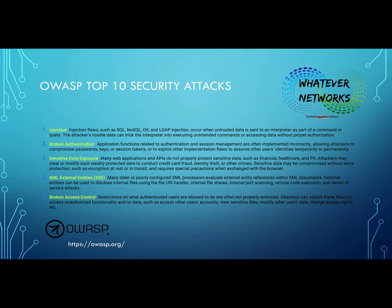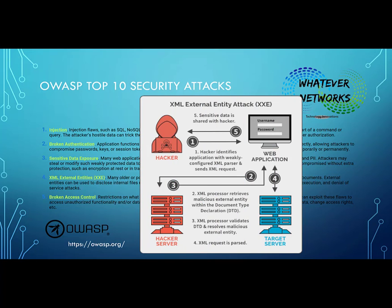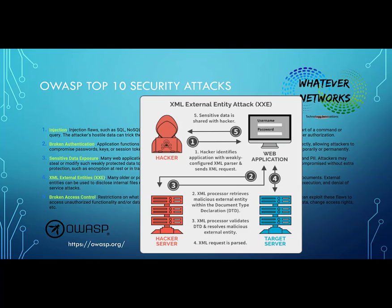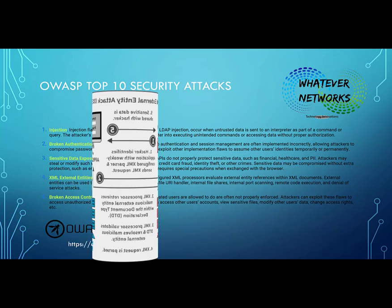Number four is XML external entities. Many old or poorly configured XML processors evaluate external entity references within HTML documents. External entities can be used to disclose internal files using a URI handler, internal file shares, internal port scanning, remote code execution, and denial of service attacks.